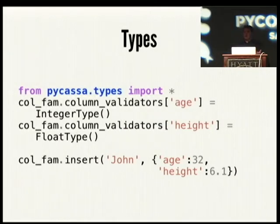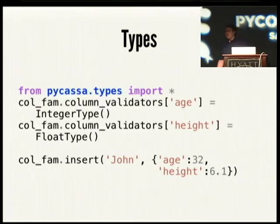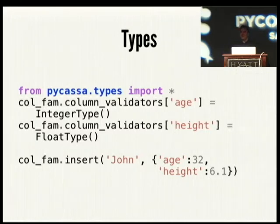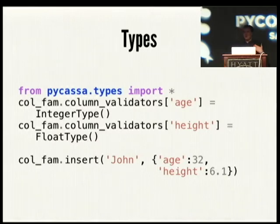You can also tell PyCassa the types of your data. If you've specified types in your schema or tell PyCassa the types, it will do data conversions for you — you don't have to give everything as strings or bytes. You can stick an integer into a dictionary and PyCassa will say 'age is an integer' and convert 32 into a byte stream. Or if height is a float, it'll take that float and convert it to an IEEE float representation. And when you do a get, it converts back — you'll actually get a float object returned.